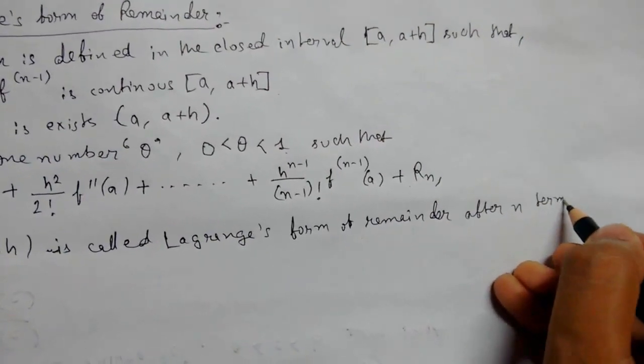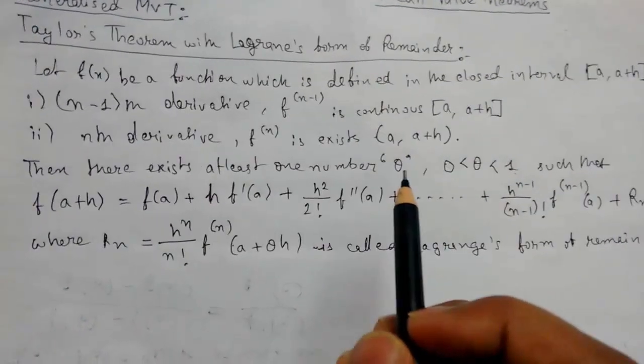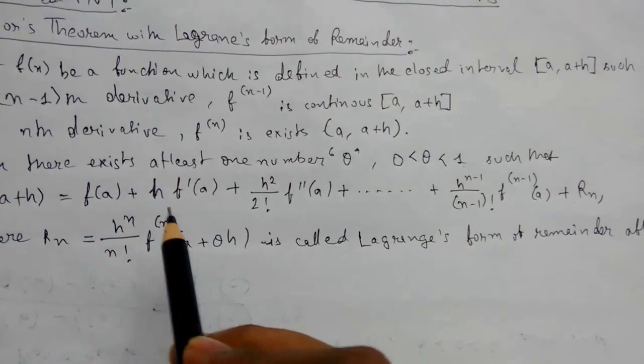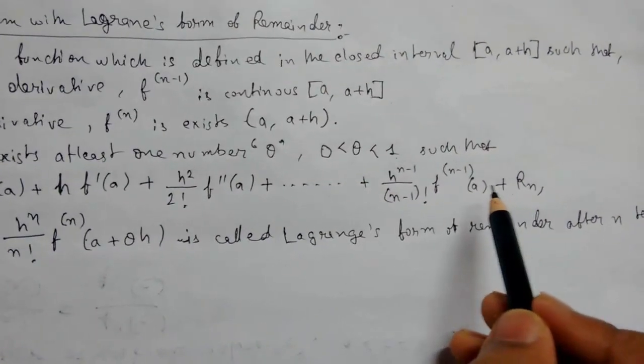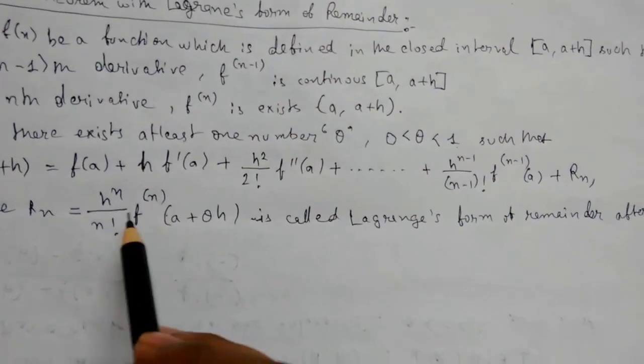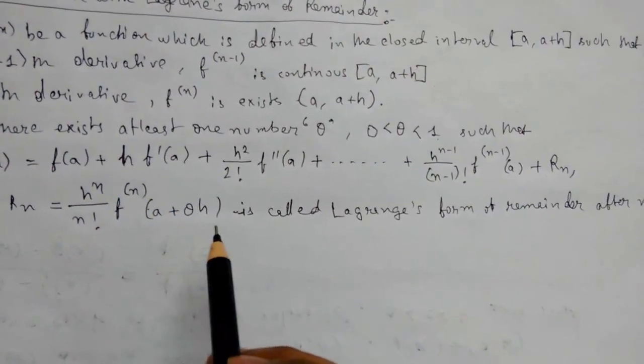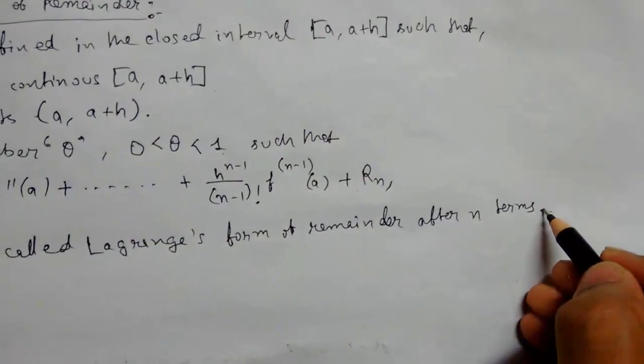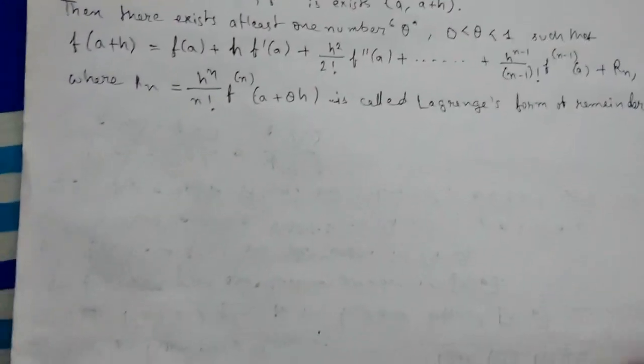So Taylor's theorem with Lagrange's form of remainder is: f(a+h) = f(a) + h·f'(a) + ... up to R_n, where R_n, this must be remembered, equals h^n/n! · f^(n)(a + θh). This is our Taylor's theorem with Lagrange's form of remainder.